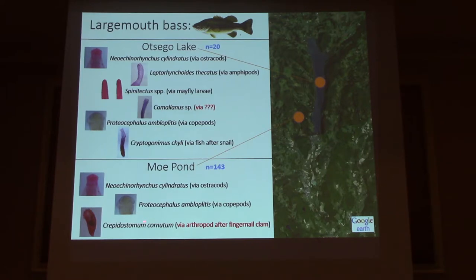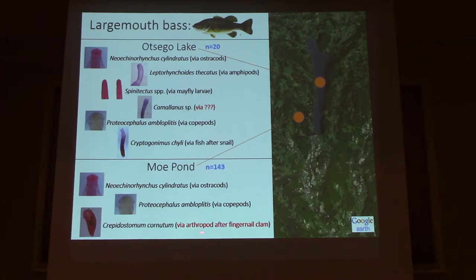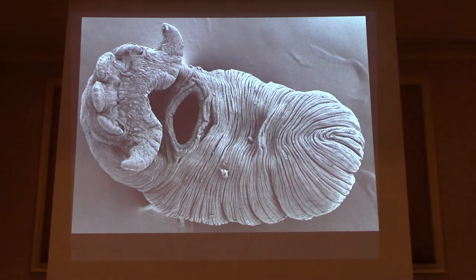Moe Pond is essentially monotypic — mostly largemouth bass, a few brown bullhead, and really nothing else — so we don't see quite the parasite diversity there. We have a couple species in common with lake bass, but the pond has a worm not found in the lake: Crepidostomum cornutum, described from Oneida Lake by Van Cleve and Mueller. It's transmitted via fingernail clams and then arthropods, probably mayfly larvae. We're pretty confident this worm is not in Otsego Lake.